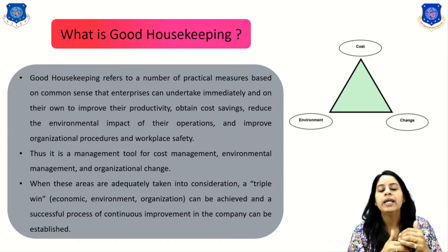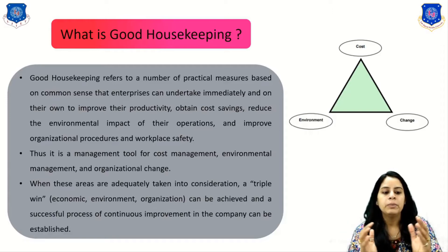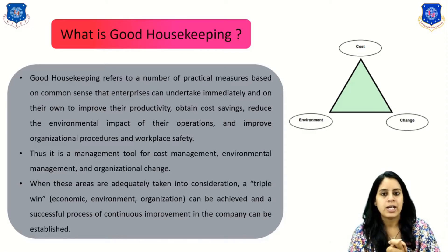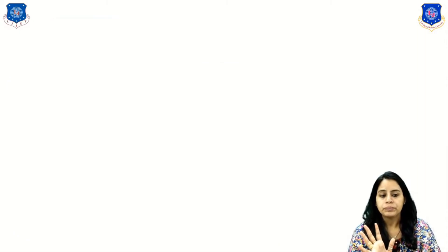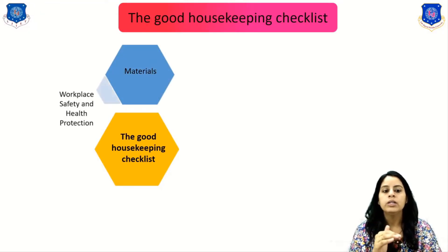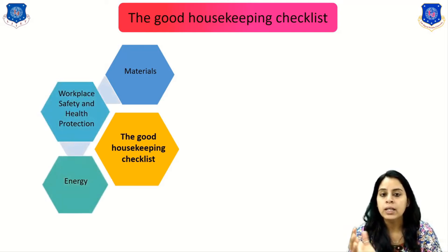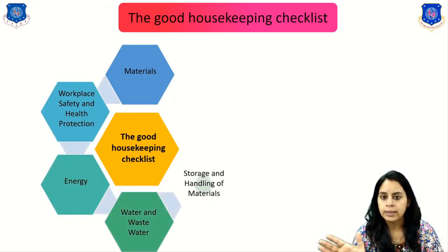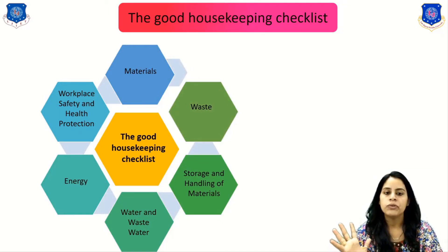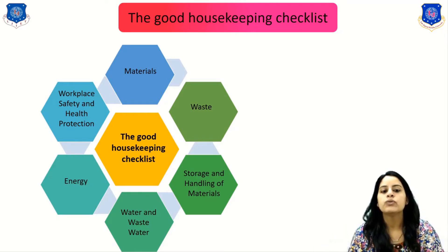When these areas — cost, environment, and organizational change — are adequately taken into consideration, a triple benefit can be achieved and a successful process of continuous improvement for the company can be established. The good housekeeping checklist includes: materials, workplace safety and health protection, energy, water and wastewater, storage and handling of materials, and waste.